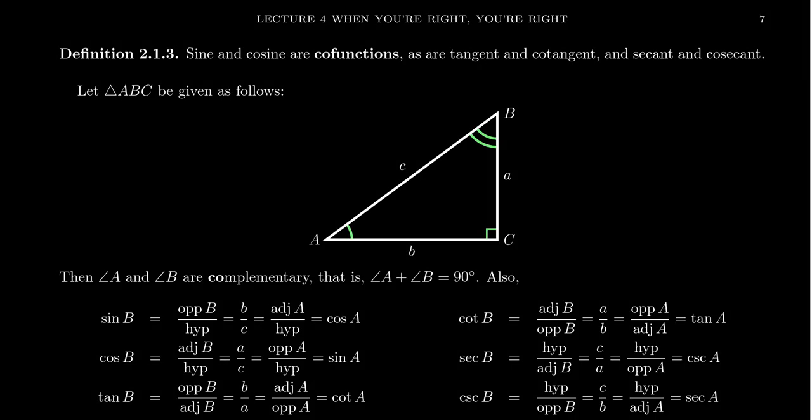In a previous video, we demonstrated the so-called reciprocal and quotient identities of the six trigonometric ratios, showing how the functions are related to each other. Cosecant is just the reciprocal of sine; tangent is just sine divided by cosine. It turns out there is a litany of relationships between trigonometric functions.